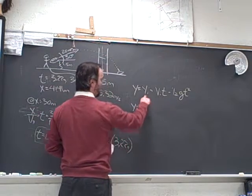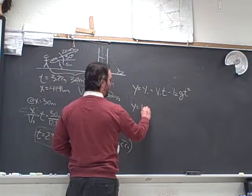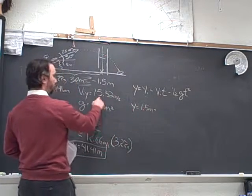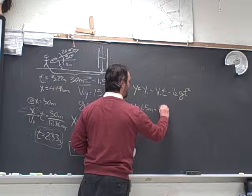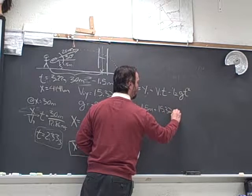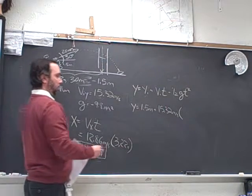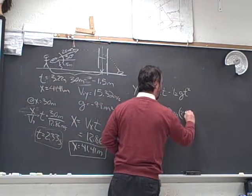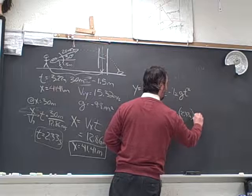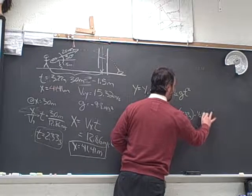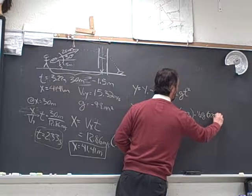So y equals our initial displacement is 1.5 meters off the ground, plus the v_i, which is 15.32 in the y direction, times our time of 2.33, that's where it gets the field goal post, minus one-half g, at the same time, 2.33 squared.